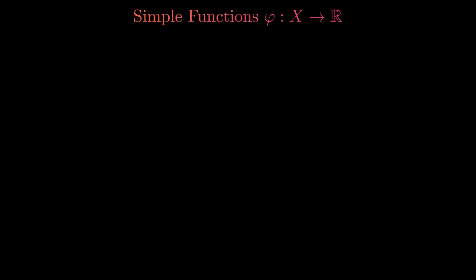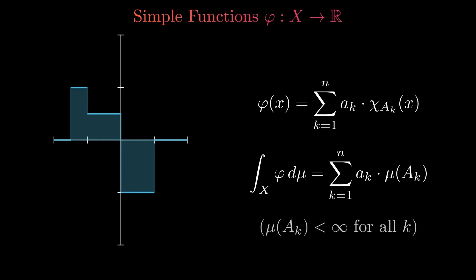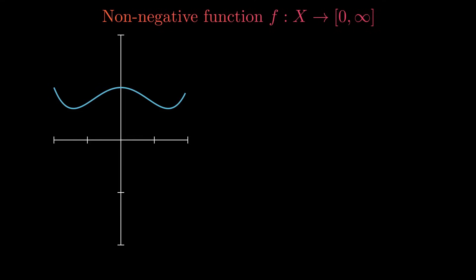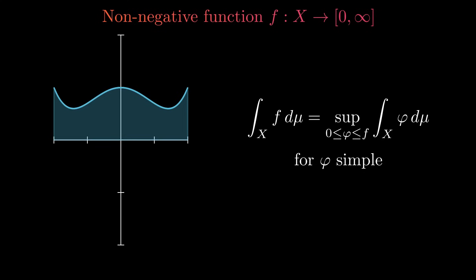Let's turn back to the study of measurable functions. The next simplest measurable functions are called simple functions — a simple function only takes on finitely many values and can be written as a linear combination of characteristic functions. We define the integral of a simple function to be the sum of the coefficients times the measure of the sets, assuming all the sets have finite measure to avoid an infinity minus infinity situation. With the definition of the integral for simple functions, we are able to look at measurable non-negative functions. We can approximate these functions from below with simple functions; as the approximation becomes better, the area under the simple function approaches the area under the curve. Since the simple functions approximate from below, a higher value of the integral of the simple function always yields a better approximation. Thus, we define the integral of a non-negative function to be the supremum — the lowest upper bound of the integral of all non-negative simple functions which are pointwise smaller than the function we are integrating.